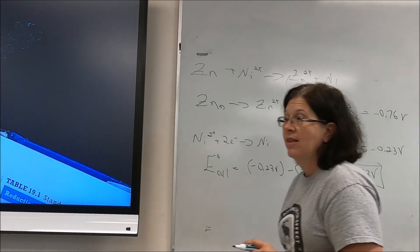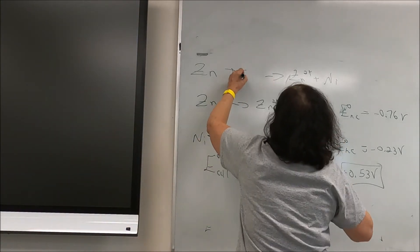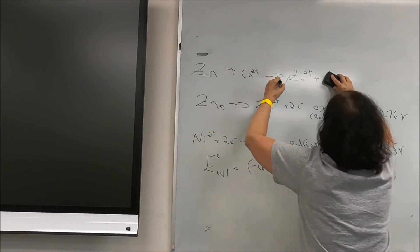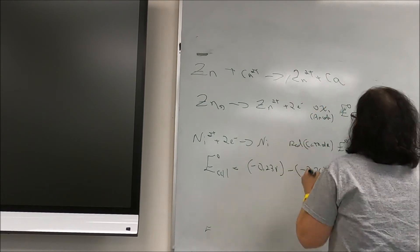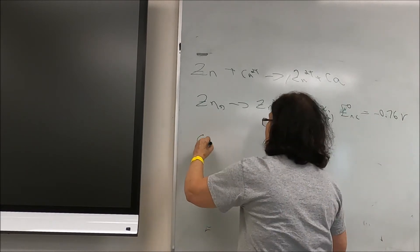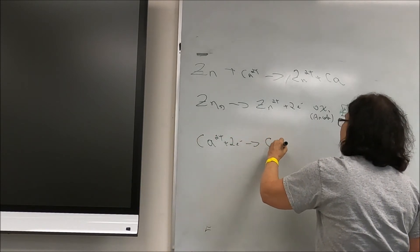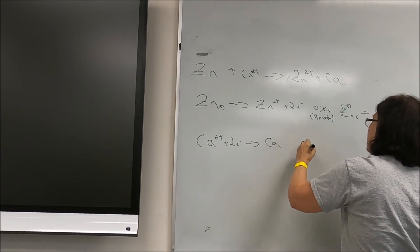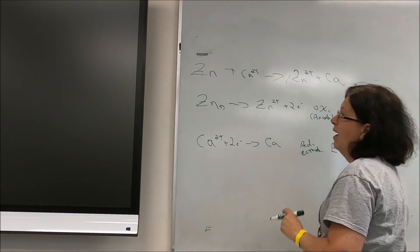For the second reaction, we replace nickel with calcium. The zinc half reaction is the same at the anode, but the cathode reduction is now Ca²⁺ + 2e⁻ → Ca. Looking up E° for Ca²⁺/Ca gives −2.76 V. So E°cell = (−2.76 V) − (−0.76 V) = −2.00 V. This is non-spontaneous because E°cell is negative.